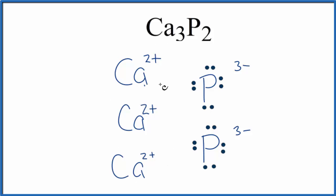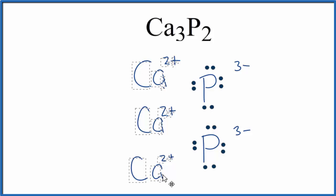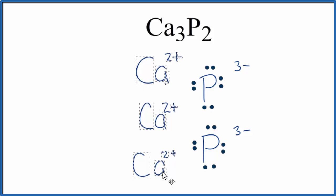And since we have these positive charges, these negative charges, opposite charges attract, and that's what's going to form our ionic bond in the Ca3P2 Lewis structure.